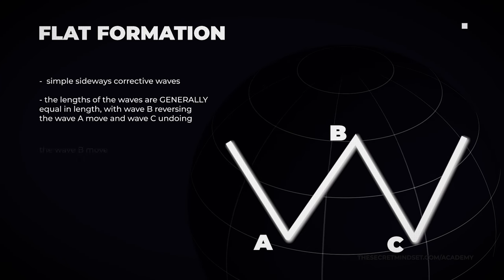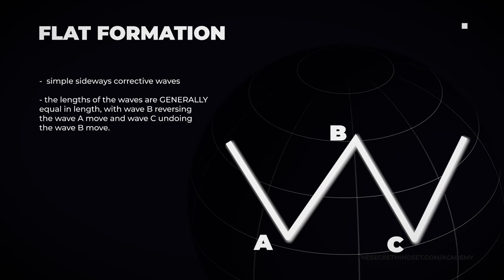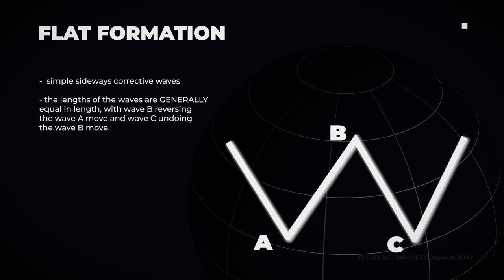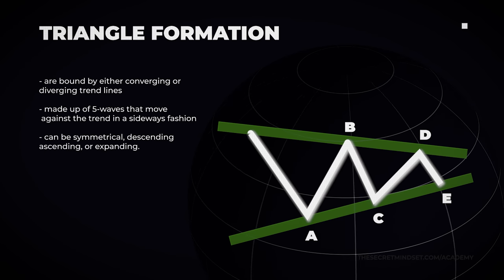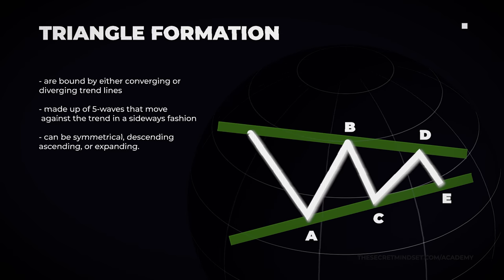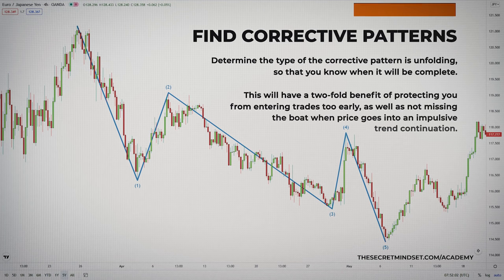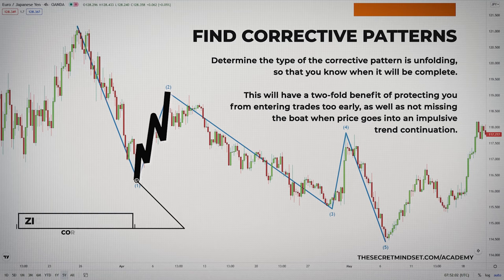The second one is the flat formation. Flat formations are simple sideways corrective waves. In flats, the lengths of the waves are generally equal in length, with wave B reversing the wave A move, and wave C undoing the wave B move. And finally, the triangle formation. Triangle formations are corrective patterns that are bound by either converging or diverging trend lines. Triangles are made up of 5 waves that move against the trend in a sideways fashion. These triangles can be symmetrical, descending, ascending, or expanding. A lot of the pre-trade analysis has to go into knowing what kind of corrective pattern is unfolding, so that you know when it will be complete. This will have a two-fold benefit of protecting you from entering trades too early, as well as not missing the boat when price goes into an impulsive trend continuation.